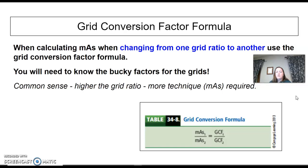But there is a grid conversion factor formula, which is this formula down here, that you'll use when you're going from one grid to another grid. So a 6:1 grid to a 10:1, or a 10:1 to a 5:1, something like that. Use your common sense on these. The higher the grid ratio, the more mAs you need.